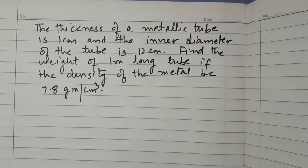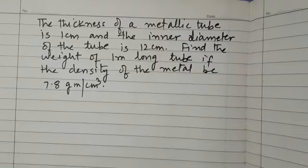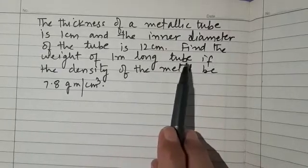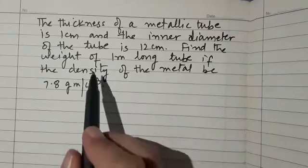Hello dear students, let us discuss this question. The thickness of a metallic tube is 1 centimeter and the inner diameter of the tube is 12 centimeter. Find the weight of 1 meter long tube if the density of the metal be 7.8 grams per cubic centimeter.